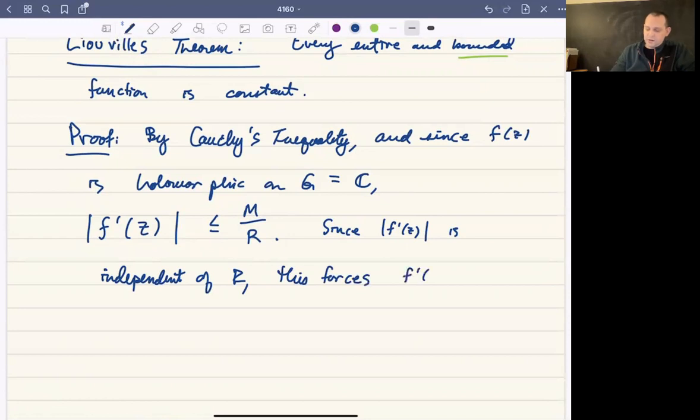And since the modulus of this quantity is zero, that tells you that since the modulus of this quantity is zero, that tells you that that quantity itself is zero. So F prime of z is zero. And this is true, by the way, for all z.